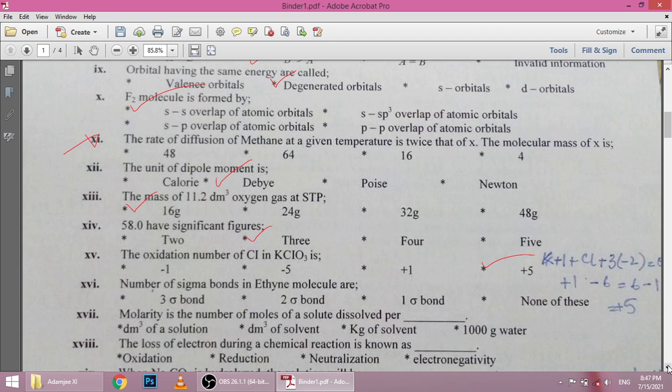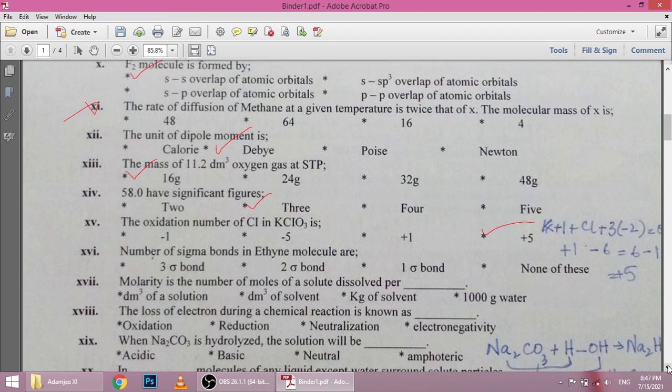Next is number of sigma bonds in ethyne molecule. We have 3 sigma bonds. Next is molarity is number of moles of solid dissolved. The loss of electron during a chemical reaction is known as oxidation.